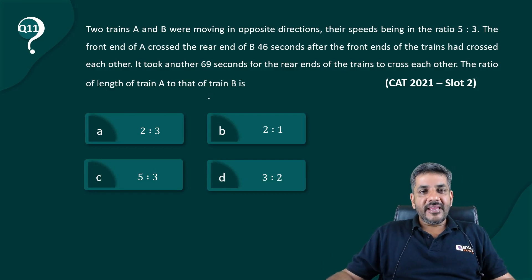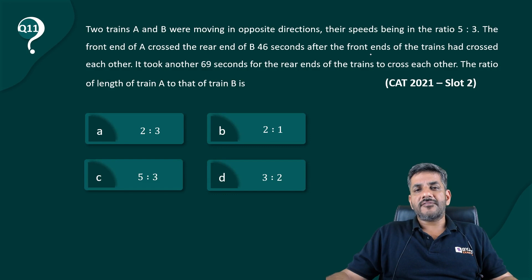Two trains A and B were moving in opposite direction, their speeds being in the ratio 5 is to 3. The front end of A crossed the rear end of B 46 seconds after the front ends of the trains had crossed each other.